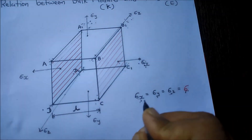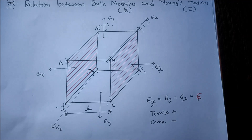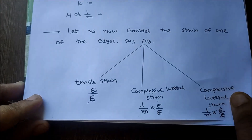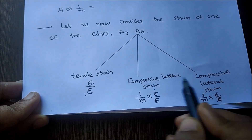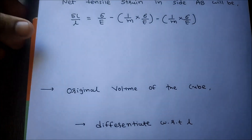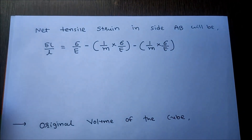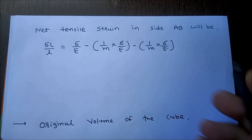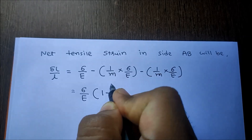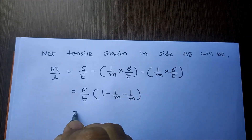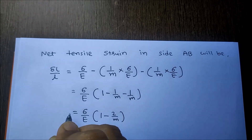We take the sign convention that tensile is positive and compressive is negative. So the net tensile strain in side AB will be: sigma by E minus (1/m) multiplied by sigma by E, minus (1/m) multiplied by sigma by E. Tensile is plus and compressive lateral strain is minus. So delta L by L equals sigma by E minus (1/m)(sigma/E) minus (1/m)(sigma/E). Taking sigma by E as common: delta L by L equals (sigma/E)(1 minus 2/m).